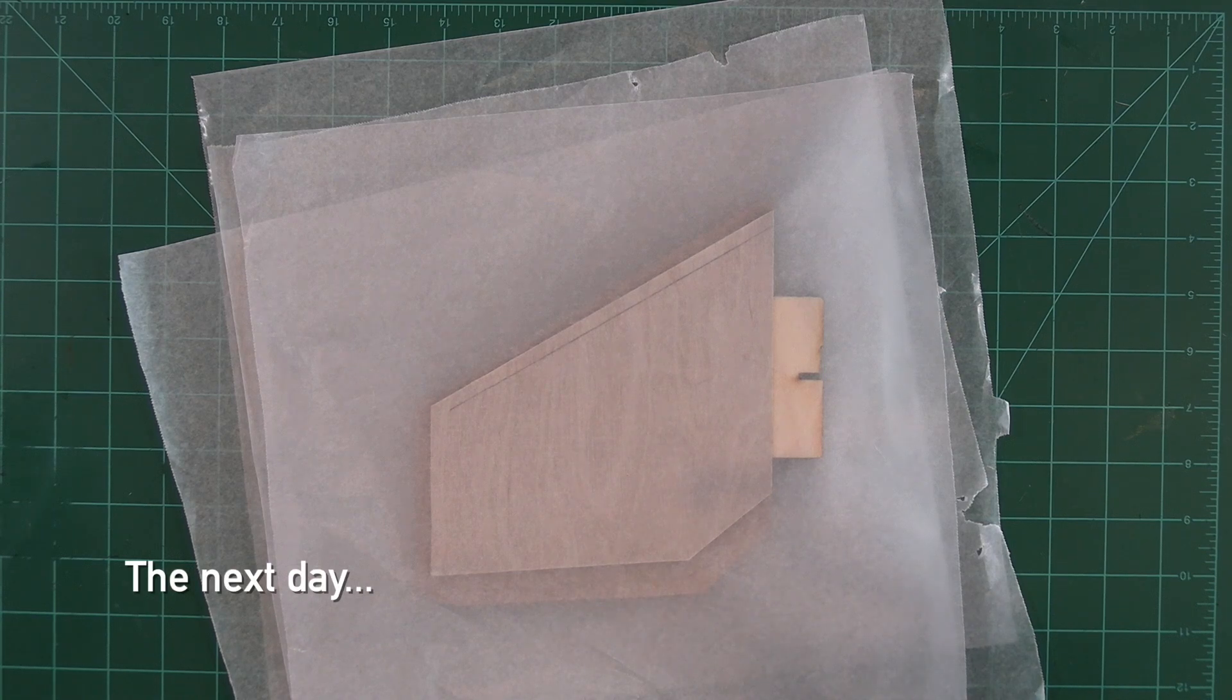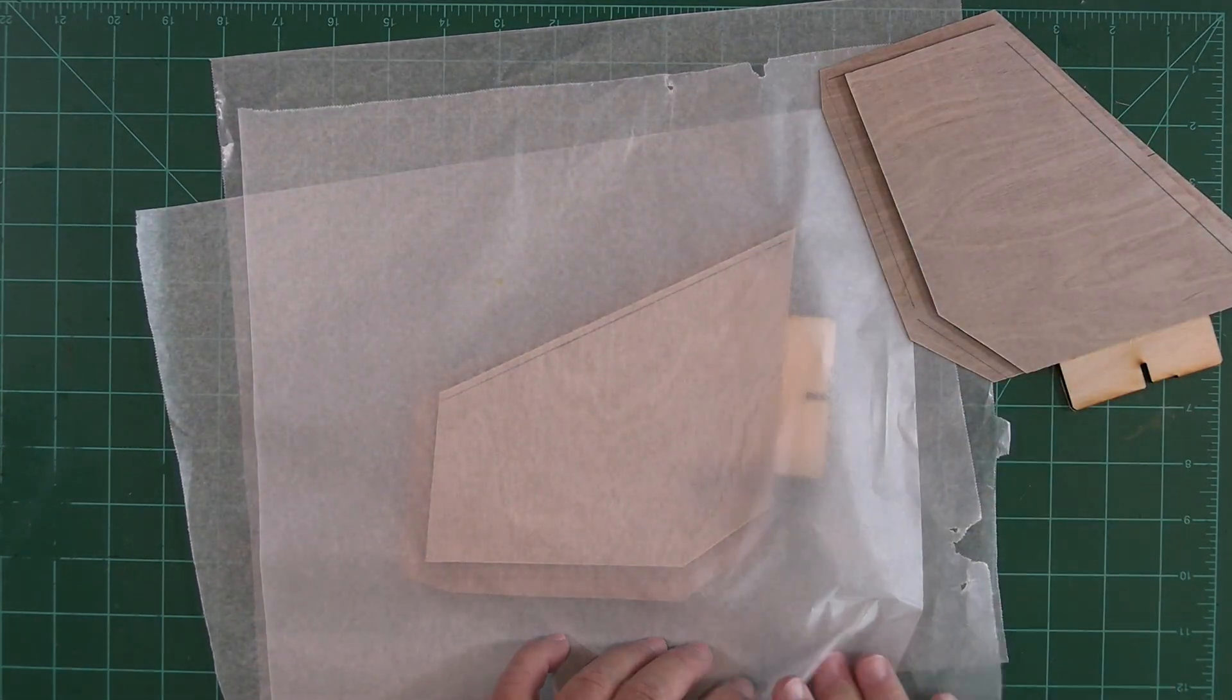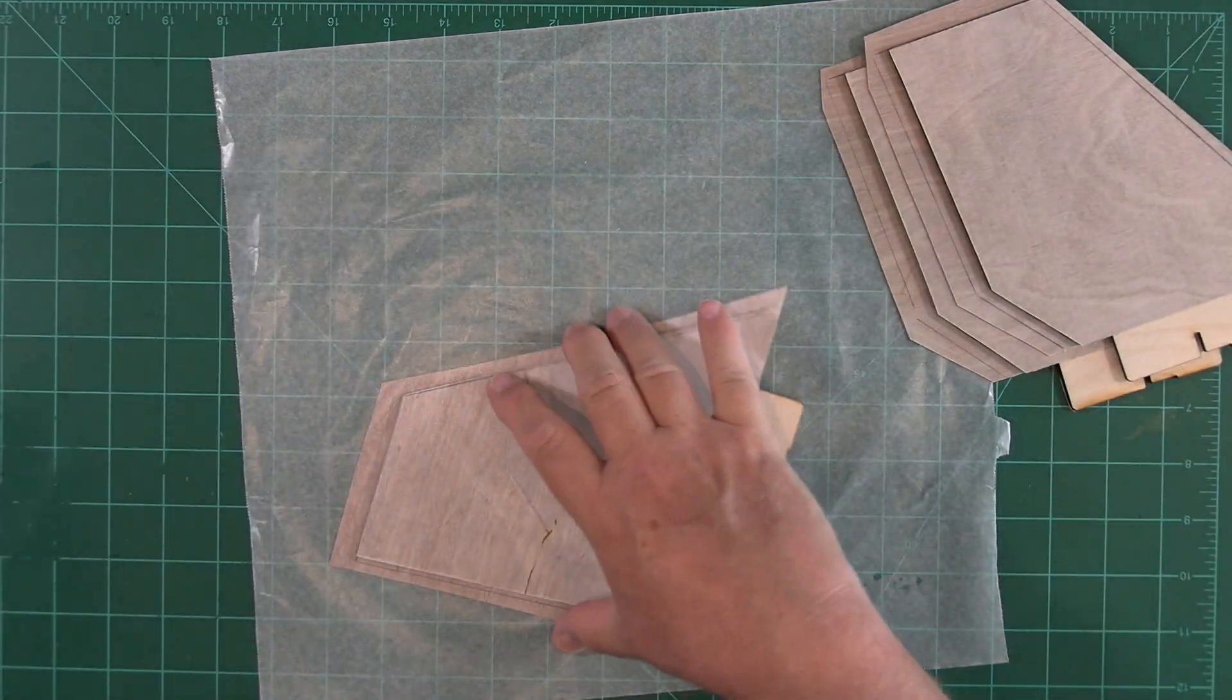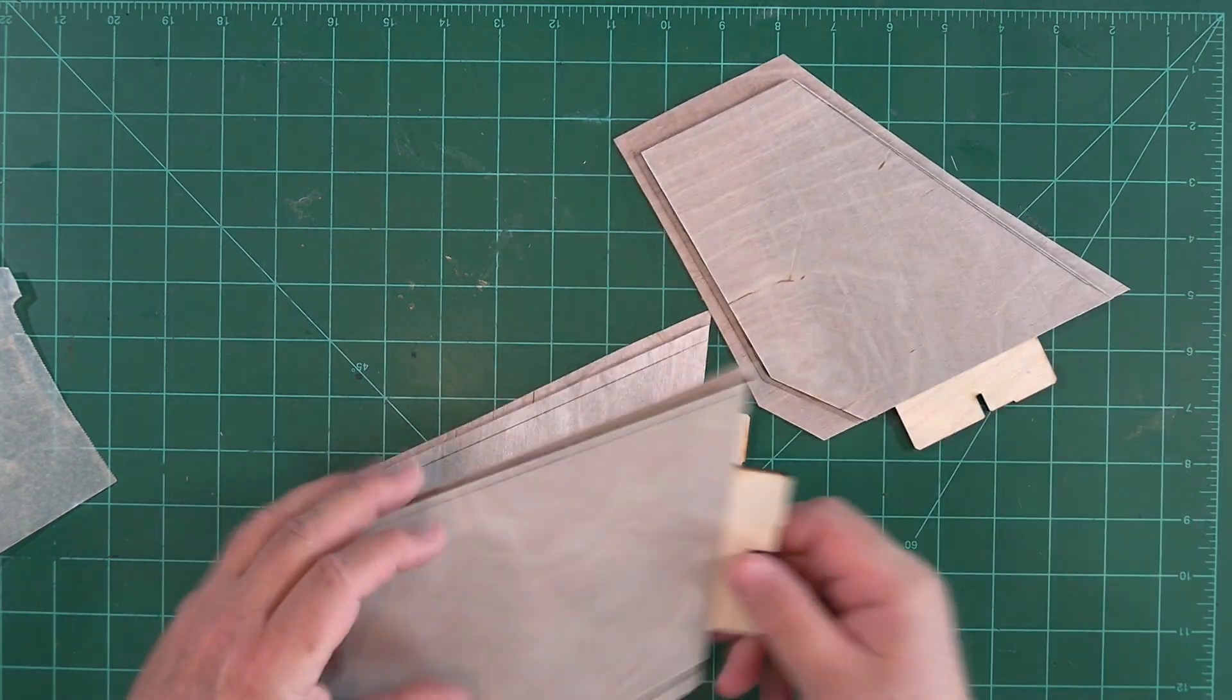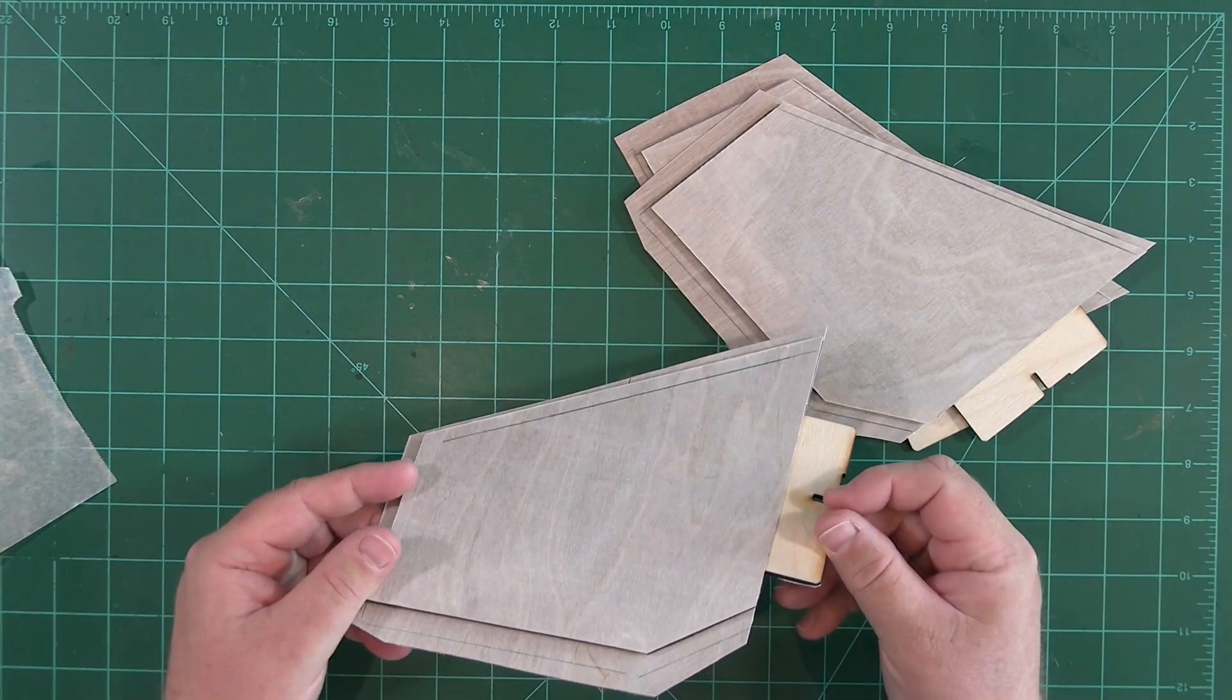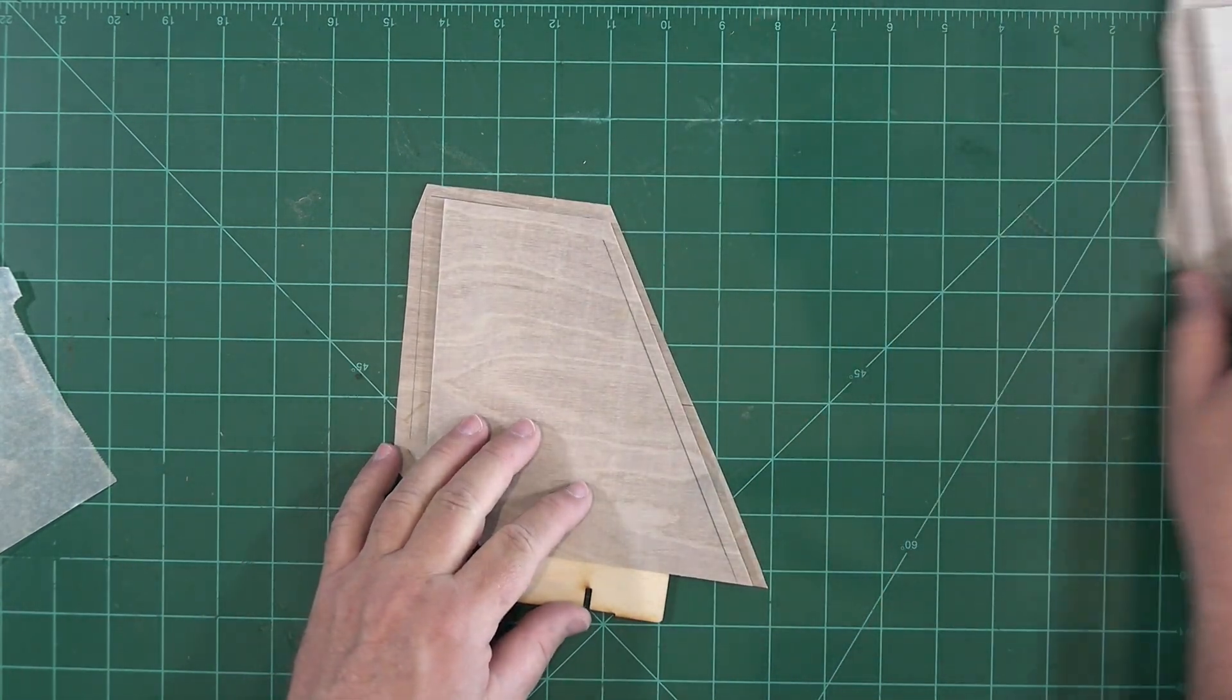Okay, we've allowed the fins to dry overnight and pulled the books off the top. Now we can unstack the wax paper and take a look at what we have. Everything looks good on that one, and that one, and that one. And it's a simple matter of trimming these edges now.